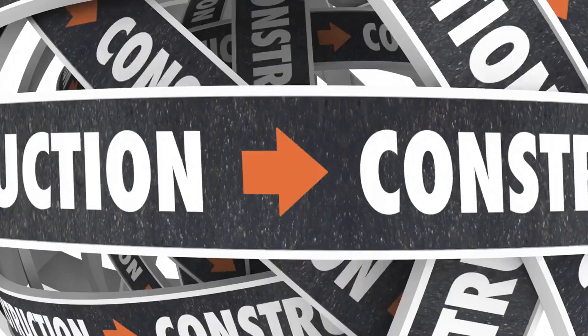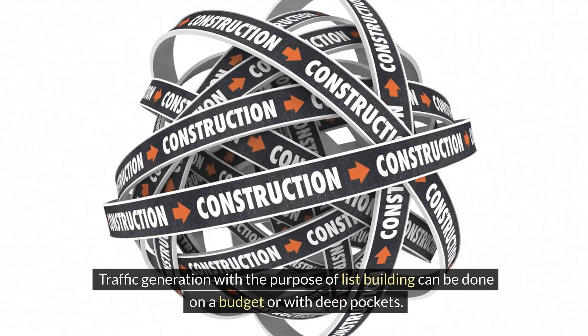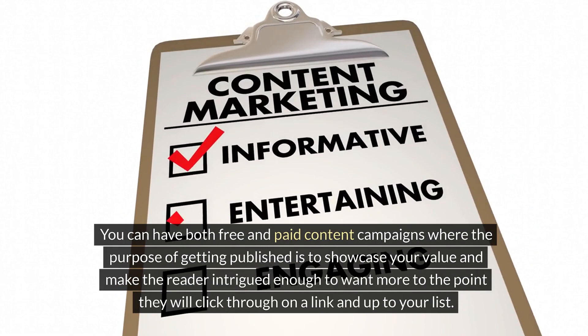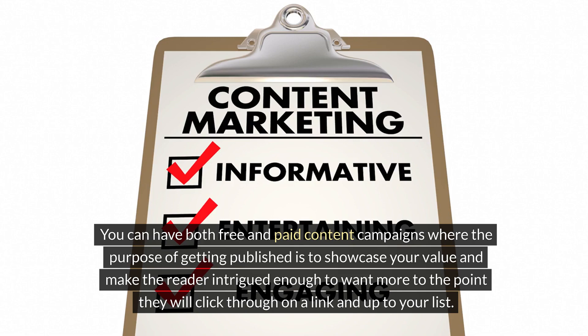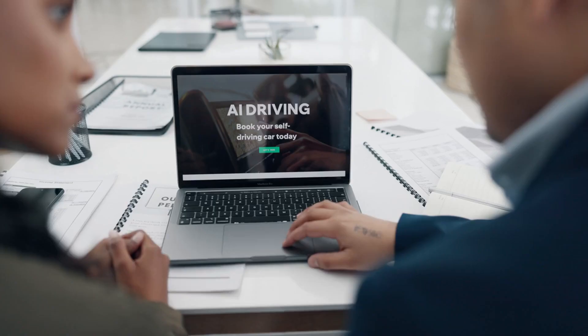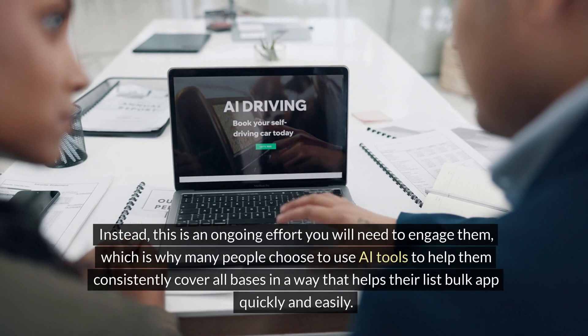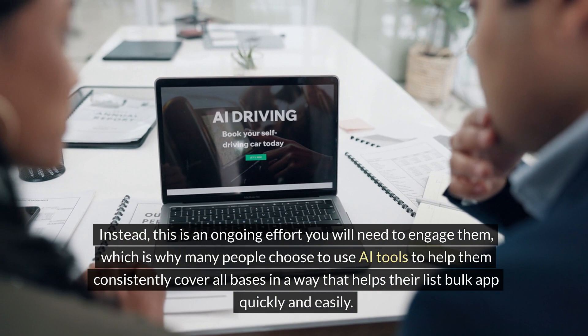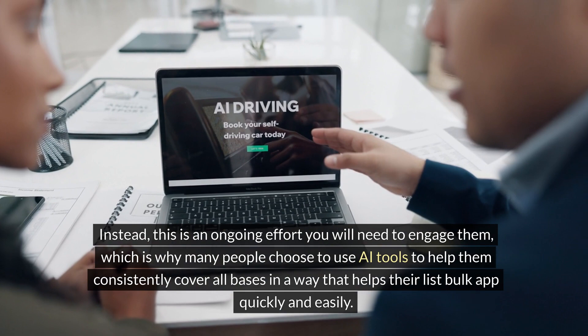Traffic generation with the purpose of list-building can be done on a budget or with deep pockets. You can have both free and paid content campaigns where the purpose of getting published is to showcase your value and make the reader intrigued enough to want more, to the point they will click through on a link and opt in to your list. This is not something you do one time and retire — it is an ongoing effort, which is why many people choose to use AI tools to help them consistently cover all bases and help their list bulk up quickly and easily.